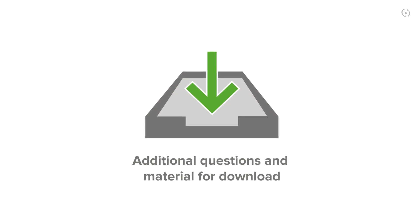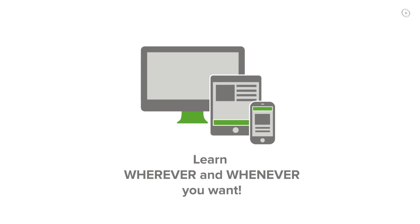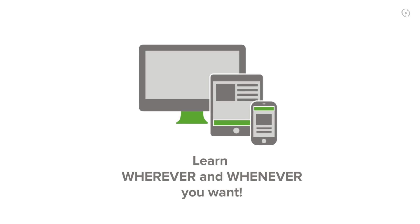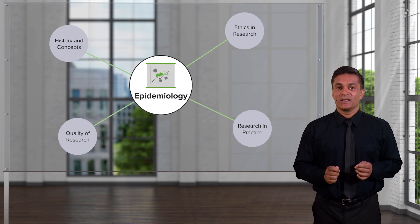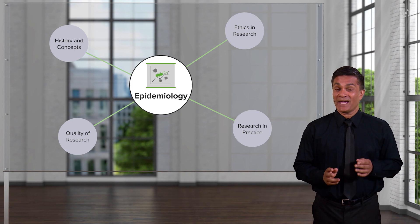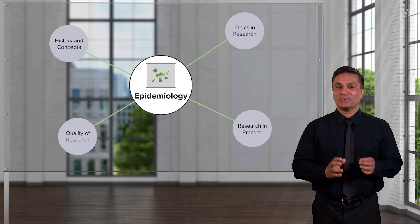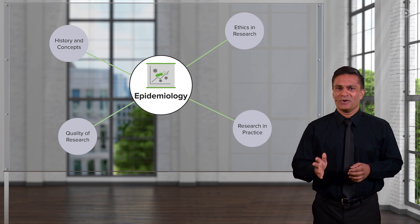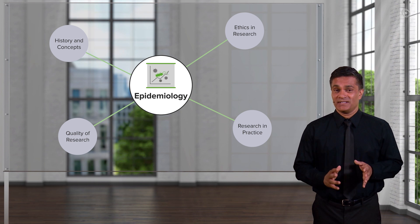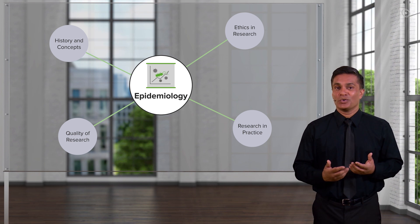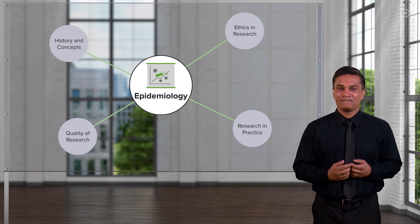Your success will be supported by Lecturio's adaptive learning platform. You'll be provided with additional questions and material for download, and you can learn wherever and whenever you want with Lecturio's mobile apps. After this course, you'll have all it takes to create your own studies and you'll be familiar with how to analyze them as well. You'll know how to measure the impact of an exposure with an outcome, like smoking and lung cancer. You'll also learn about sensitivity and specificity and other ways to evaluate the qualities of a screening test.